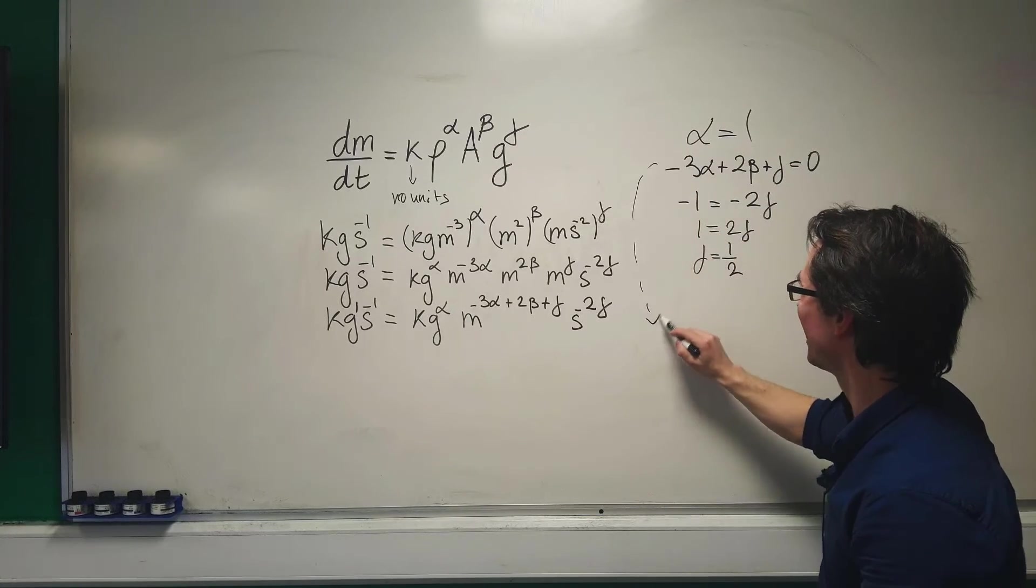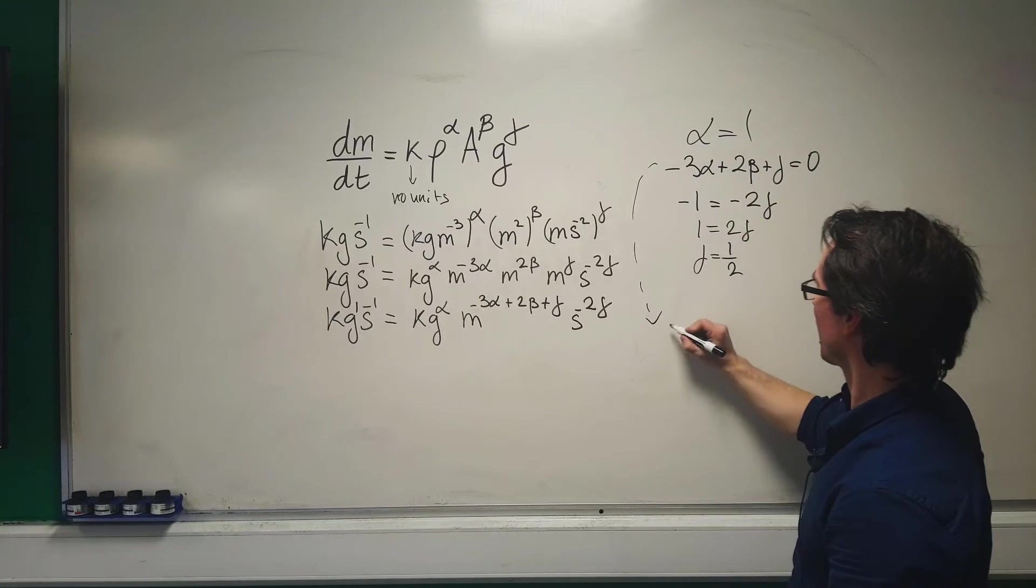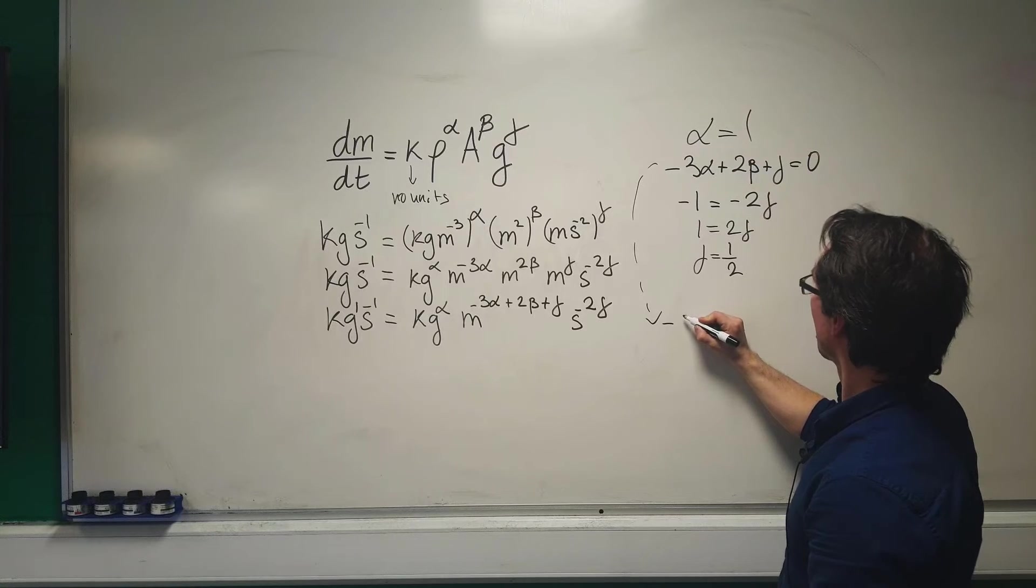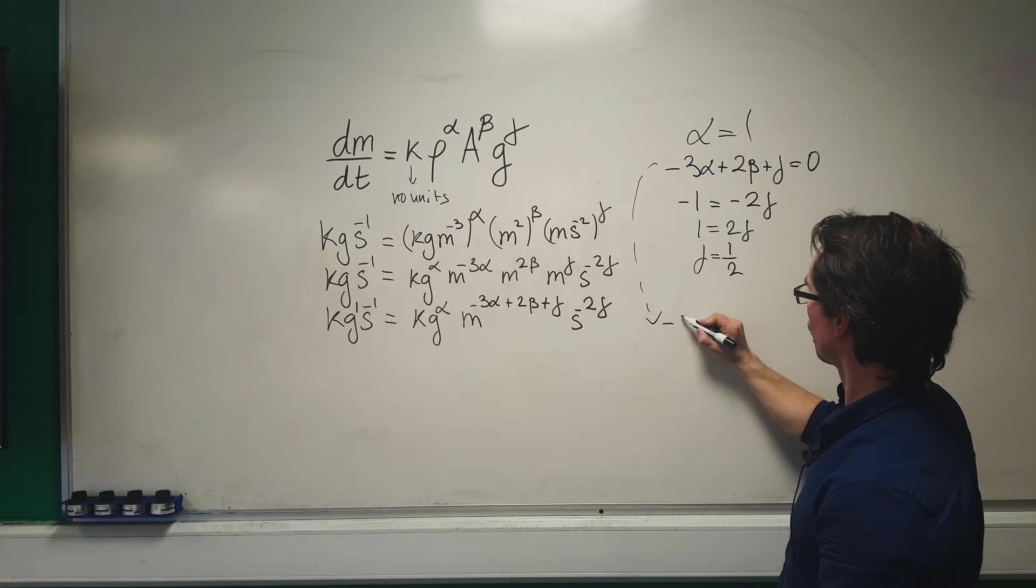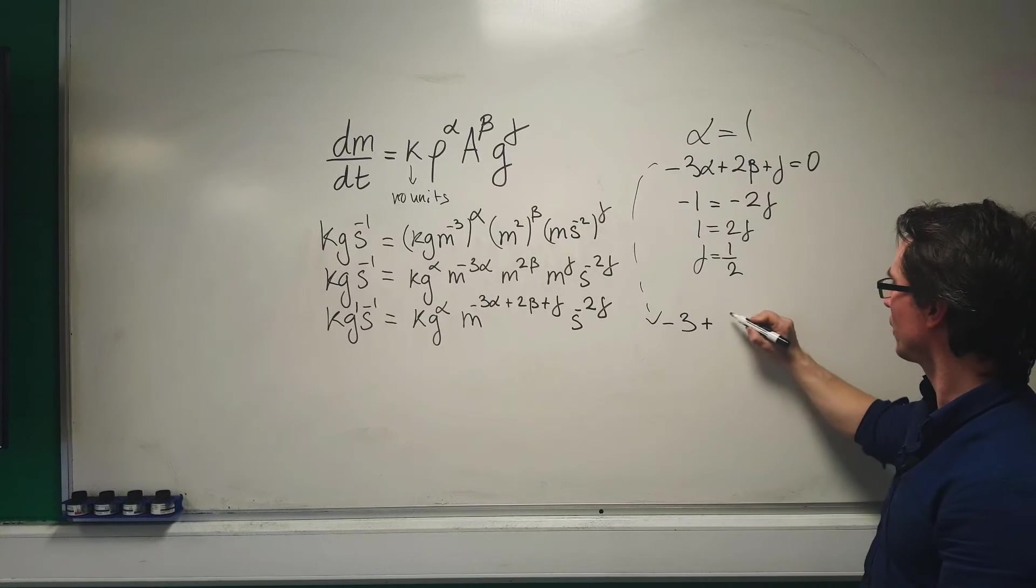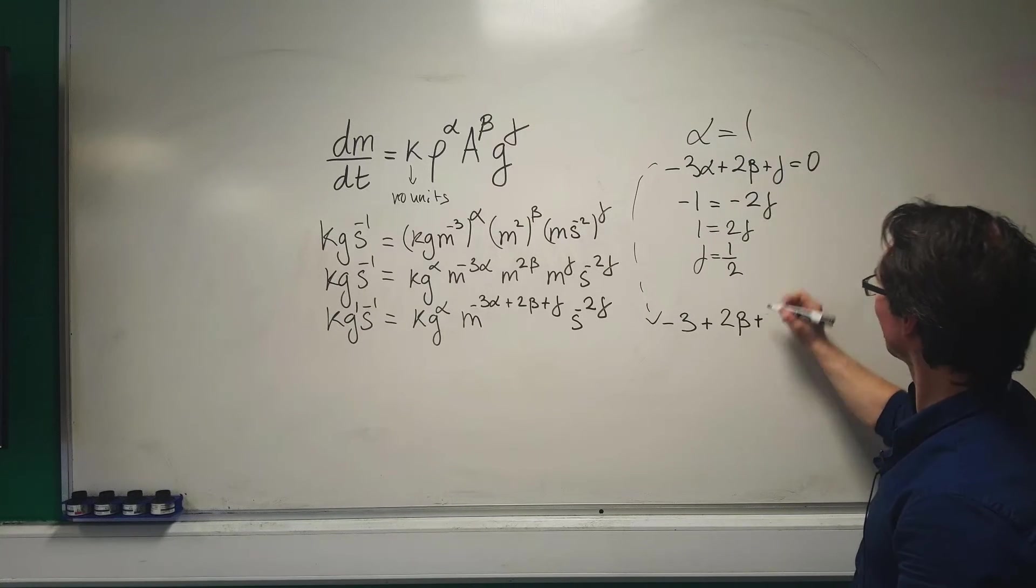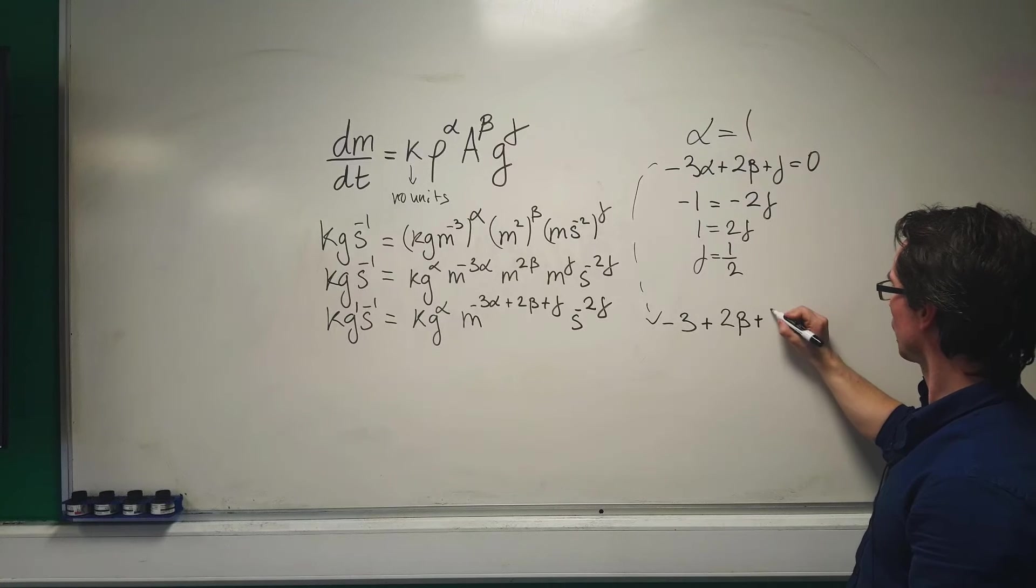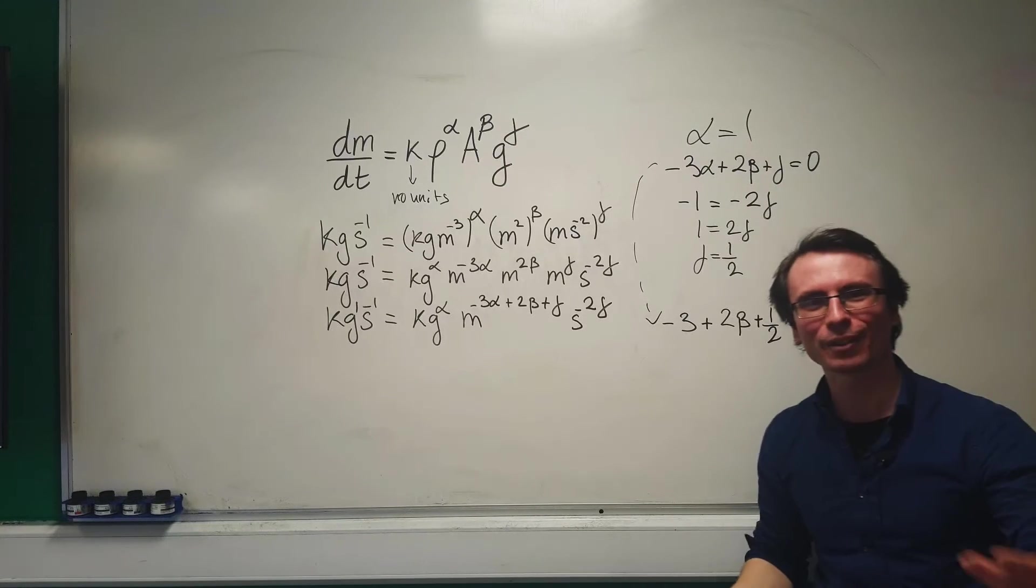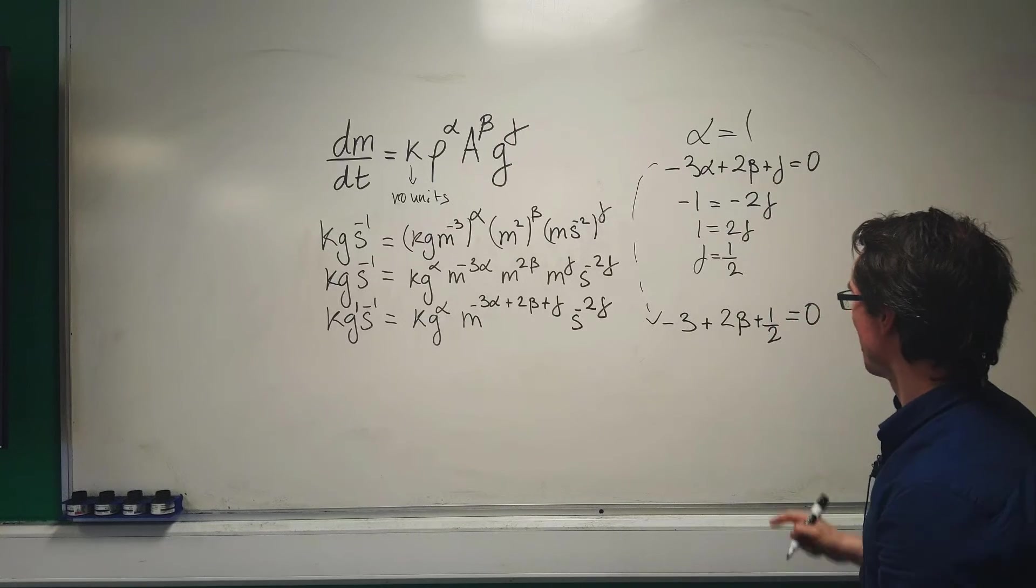Since alpha equals one, let's focus on the middle equation: -3α + 2β + γ = 0 becomes -3 + 2β + 1/2 = 0.